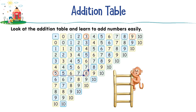8 9 10. Row 0: 0 1 2 3 4 5 6 7 8 9 10. Row 1: 1 2 3 4 5 6 7 8 9 10. Row 2: 2 3 4 5 6 7 8 9 10. Row 3: 3 4 5.